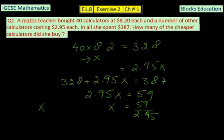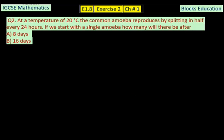So X will be equal to 20. It means that she bought 20 cheaper calculators.